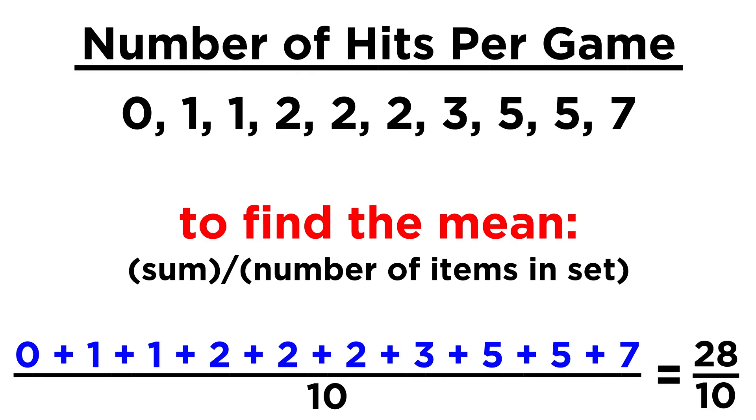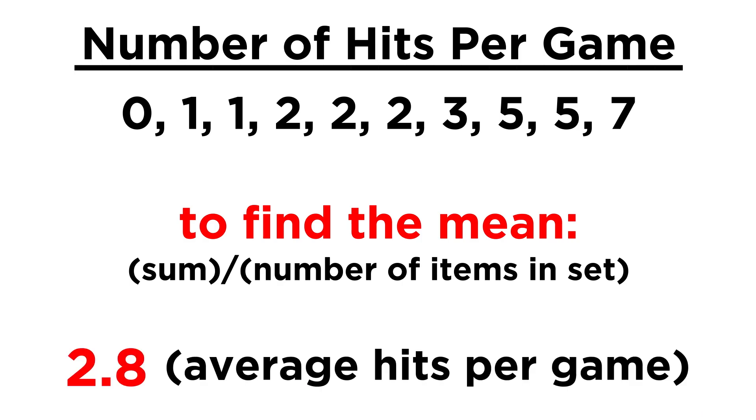For this particular set, if we add everything up, we get twenty-eight, dividing by ten since there are ten values in the set, we get two point eight. That is the average number of hits you had per game.